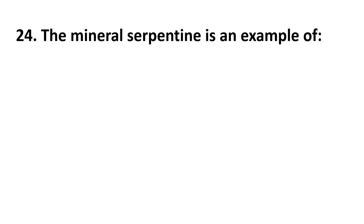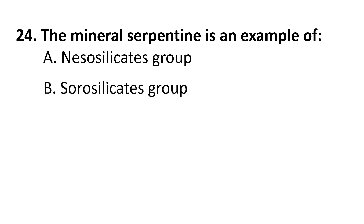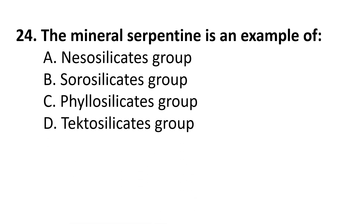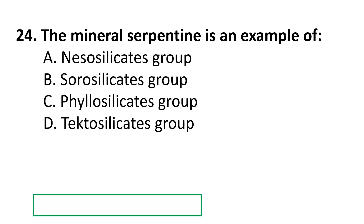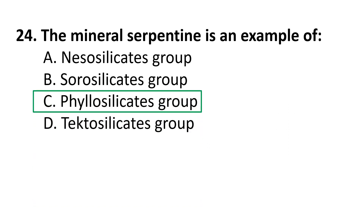Question 24: The mineral serpentine is an example of: A) Nesosilicate group, B) Sorosilicate group, C) Phyllosilicate group, D) Tectosilicate group. The correct answer is C) Phyllosilicate group.